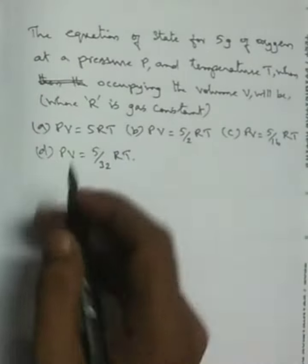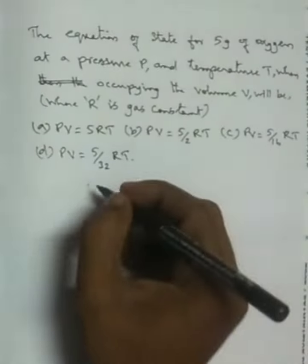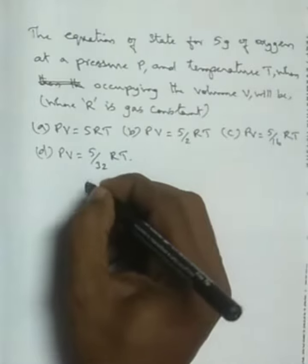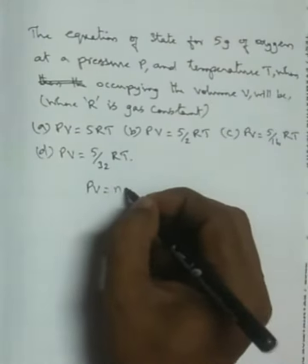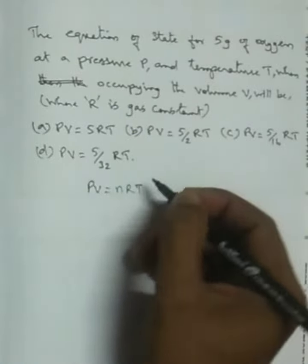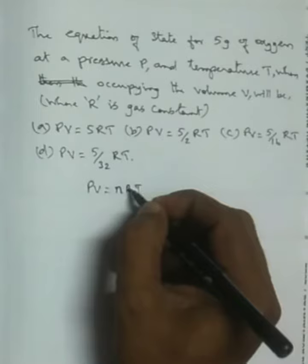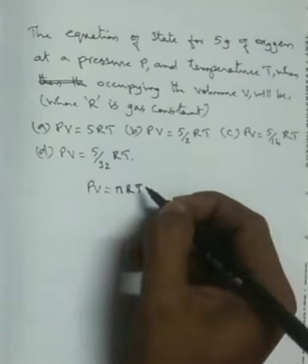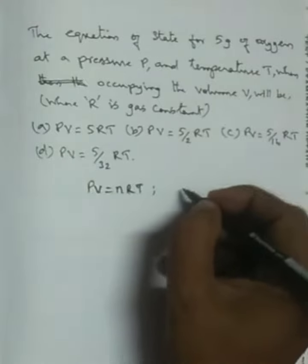The ideal gas equation is PV equal to nRT. This is the ideal gas equation. Okay? So nRT, n is the right answer to the question.